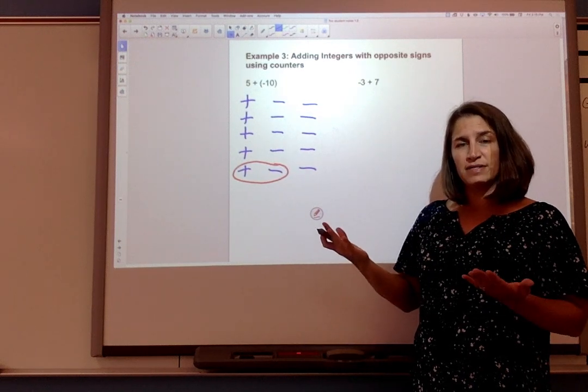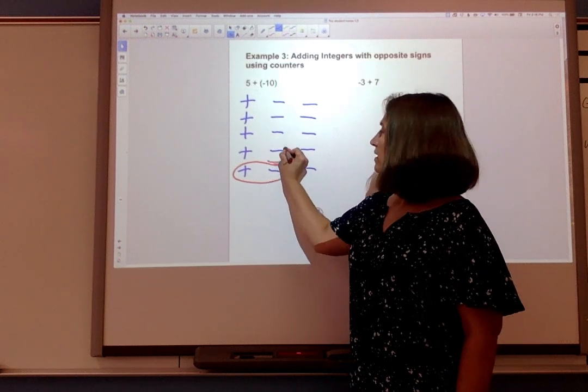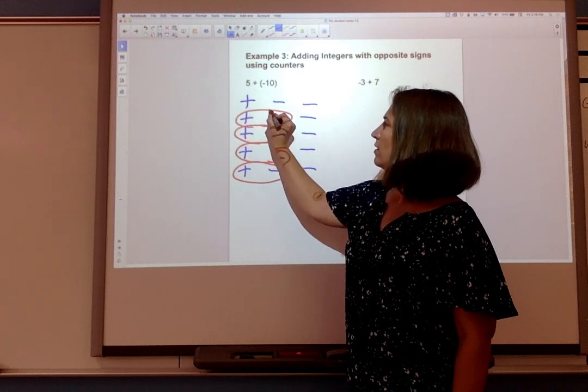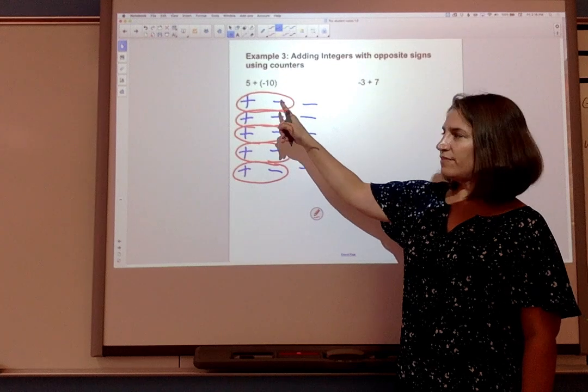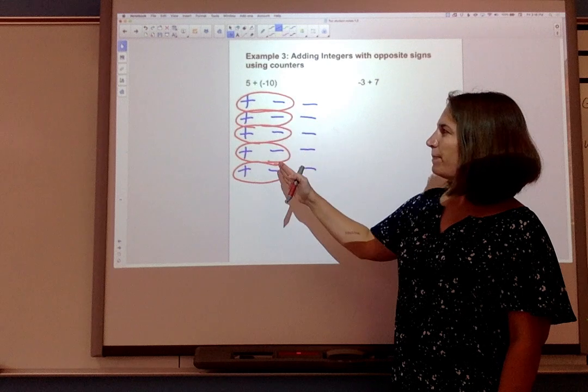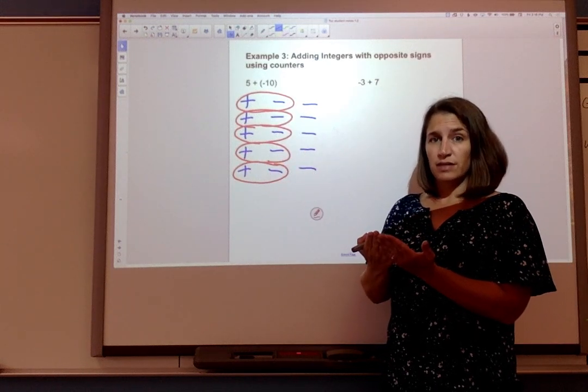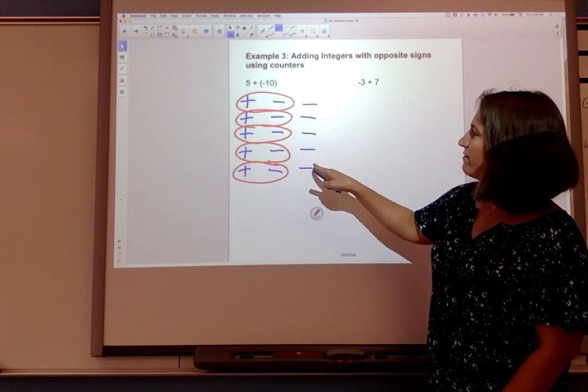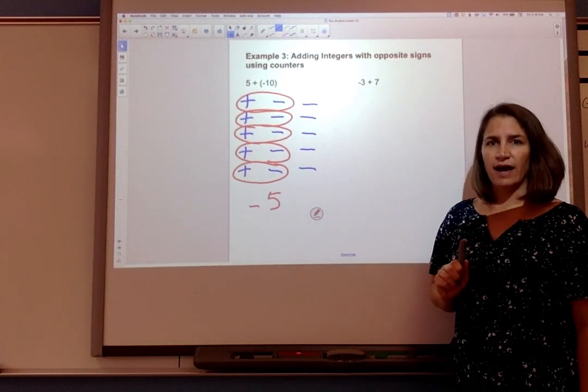Each counter and its opposite is going to cancel out to 0. So each of these pairs of one positive and one negative are a zero pair. This positive plus this negative is 0. This positive plus this negative is 0 and so on. So when I have a pair of one positive and one negative I can cancel them to 0 and see what I'm left with. So in this case I'm left with 5 negatives. So my sum is -5.